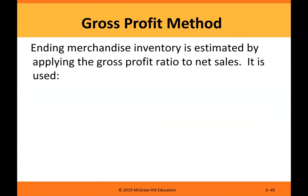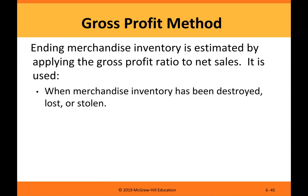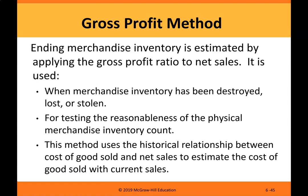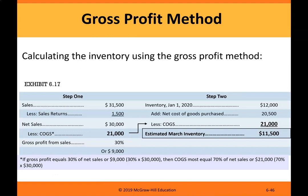Gross profit method. Ending merchandise inventory is estimated by applying the gross profit ratio to net sales. It is used when merchandise inventory has been destroyed, lost, or stolen, or for testing the reasonableness of a physical merchandise inventory count. This method uses the historical relationship between cost of goods sold and net sales to estimate cost of goods sold with current sales. For example, if gross profit equals 30% of net sales, then cost of goods sold must equal 70% of net sales.